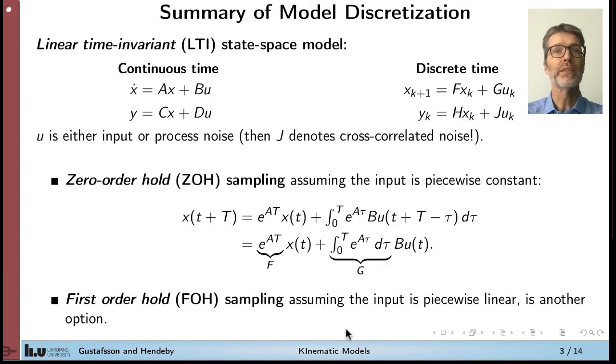To summarize another lecture, we described how to discretize a continuous-time linear state-based model into a discrete-time state-based model. And we derived the zero-order-hold sampling formula, assuming that the input is piecewise constant. We got the formula that the discrete-time F matrix is the matrix exponential e up to AT. There are other versions like the first-order sampling, but we will apply the zero-order-hold sampling today.